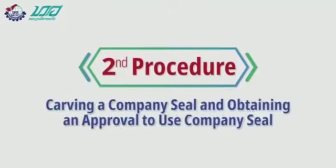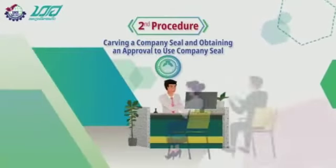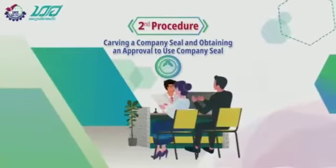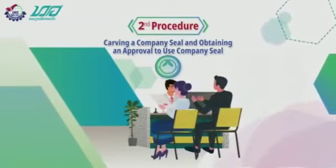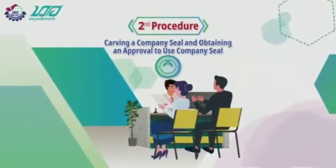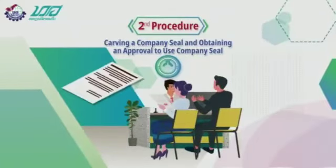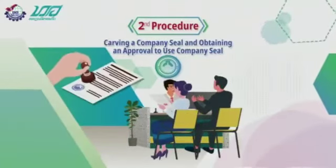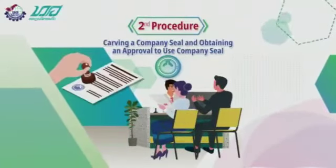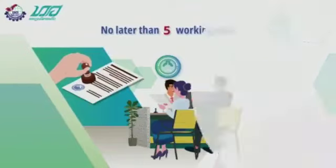Procedure 2: Carving a company seal and obtaining an approval to use the company seal. The investor presents the enterprise registration certificate to carve the company seal with the public security sector and will receive the company seal together with the approval to use the company seal no later than 5 working days.